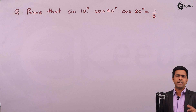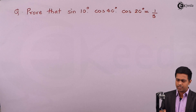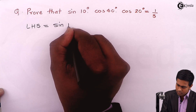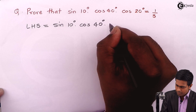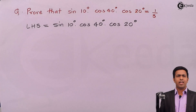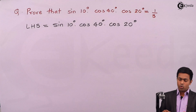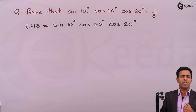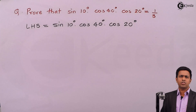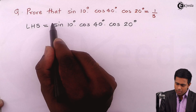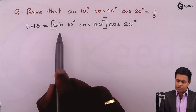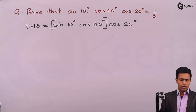Since the left hand side has the maximum number of terms, I'll start my solution with LHS. I'll consider two terms at a time, because when two trigonometric terms multiply each other, it reminds us of the defactorization formula. Looking at the first two terms: sin(10°) · cos(40°).